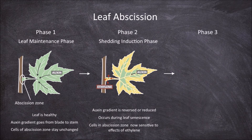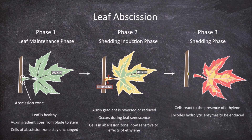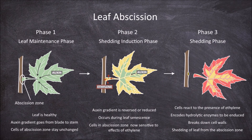The third phase is the shedding phase. During the shedding phase the cells in the abscission zone that are now sensitive to ethylene react to the presence of low levels of ethylene within the plant. This reaction causes genes that encode specific hydrolytic enzymes, such as polygalacturonase and cellulase, to be induced. These hydrolytic enzymes degrade the cell walls of the cells in the abscission zone, resulting in the shedding of the leaf and leaf abscission.